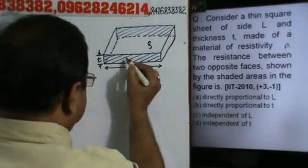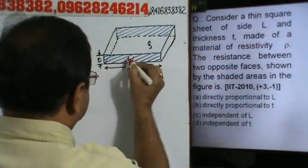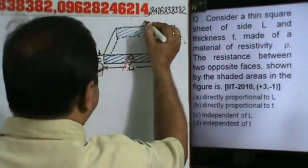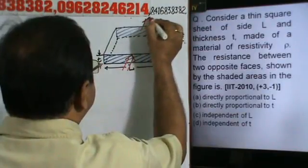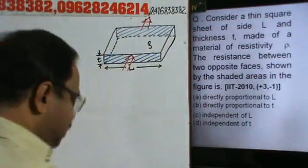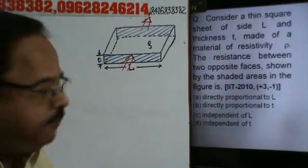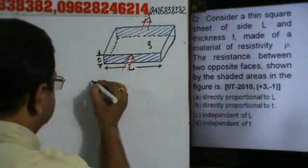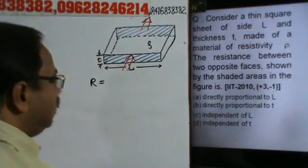What do we need? This resistance is going to be across this area. Current is going to flow like this. As per the law of resistance, we have R equals rho L by A.